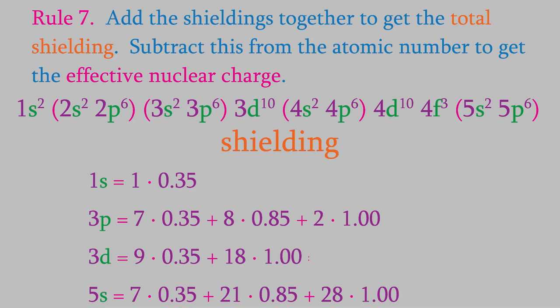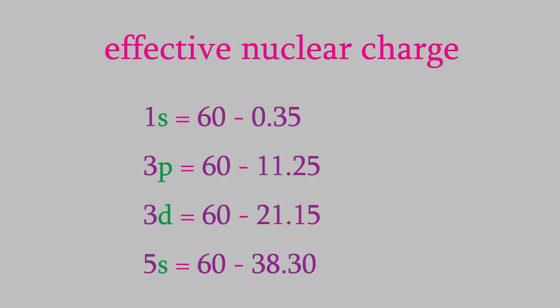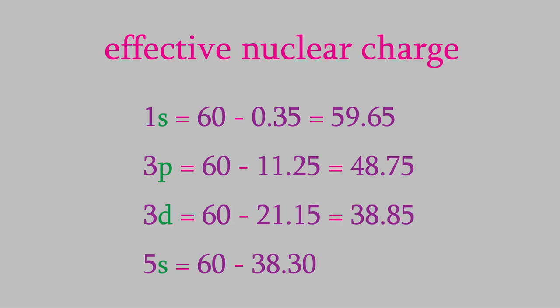The next rule tells us to calculate the total shielding for each electron. For the 1s electron, that gives us 0.35. For the 3p electron, we get 11.25. For the 3d electron, we get 21.15. And for the 5s electron, we get 38.3. Now we can find the effective nuclear charge felt by each electron — it's just the charge on the nucleus minus the shielding. Neodymium has an atomic number of 60, so the effective nuclear charge is 59.65 for the 1s electron, 48.75 for the 3p, 38.85 for the 3d, and 21.7 for the 5s.